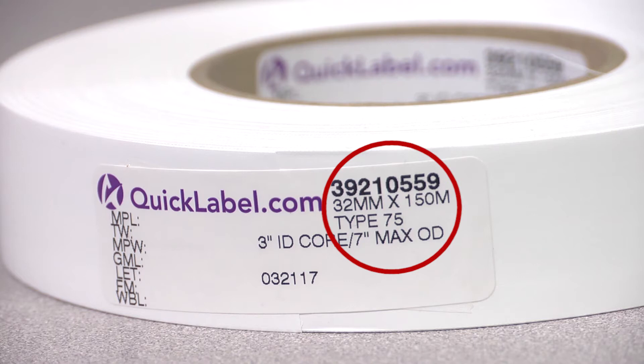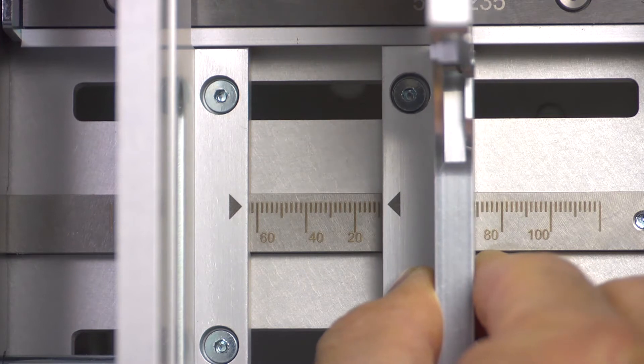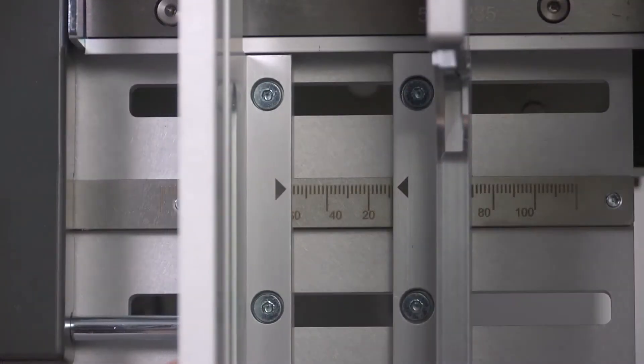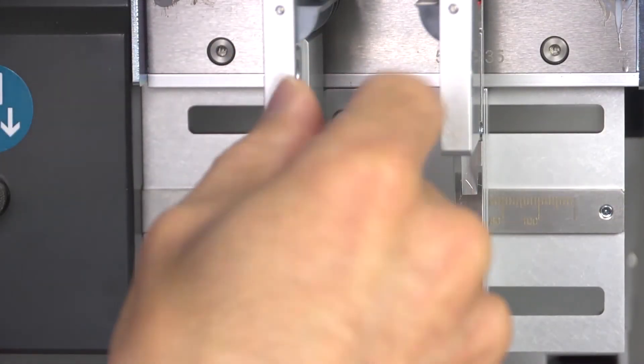Adjust the side plates on each side equal to the media width using the scale on the cutter stacker. The QL30MT and QL60MT are center aligned, so make sure the adjustments are equal on both sides. Use the edges of the side plates as pointers. Tighten the screws to secure the side plates.